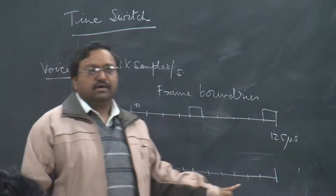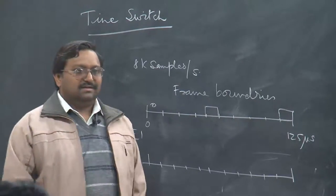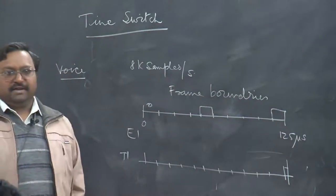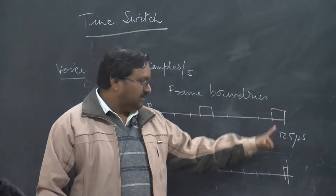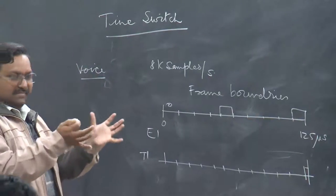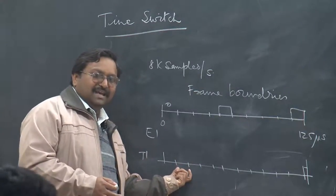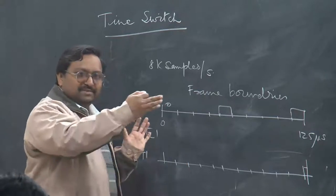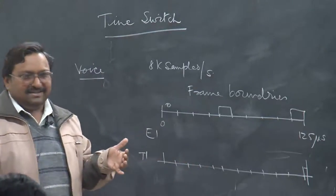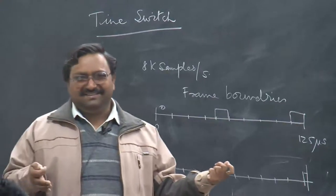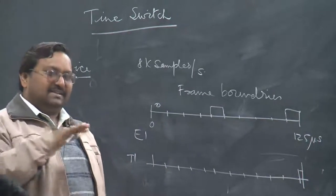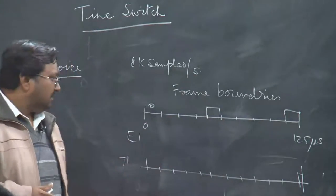In T1, signaling is done in a different fashion. One extra bit is used for framing. Signaling is handled by creating a superframe of 12 frames; in the 6th and 12th frame, the voice sample is only 7 bits — the lowest-order bit of every voice channel is used for signaling. This provides a low-bandwidth signaling channel between two endpoints.